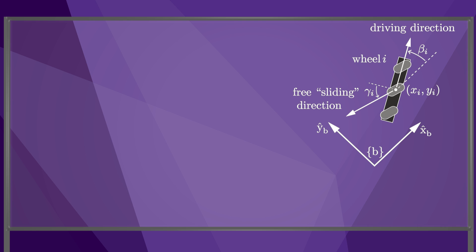With these definitions, we can calculate the wheel driving speed ui, which is the rotational speed of the motor attached to the wheel. We'll build up to the result. First we define the linear velocity at the center of the wheel, as indicated by the vector shown in green. This is the sum of the driving velocity and the free sliding velocity.